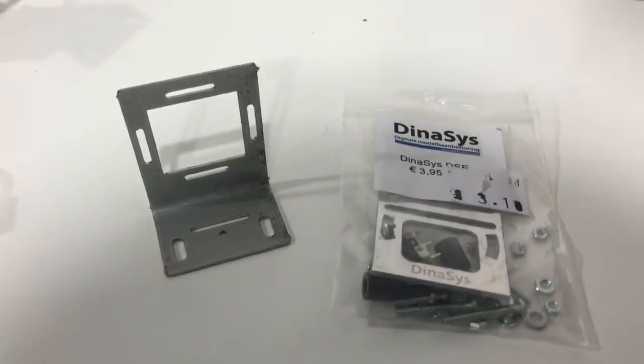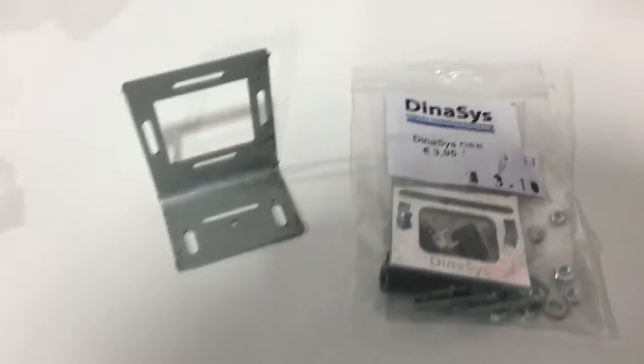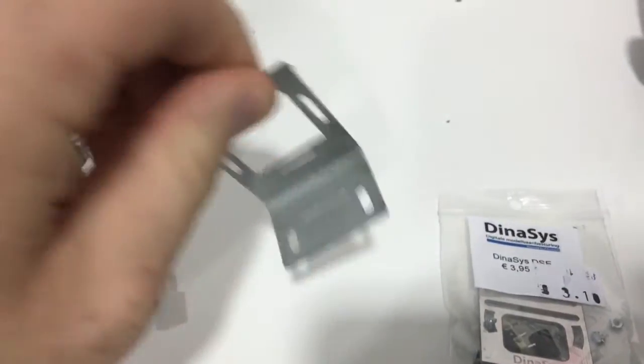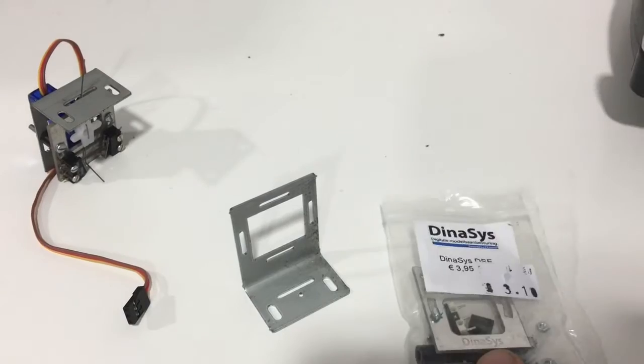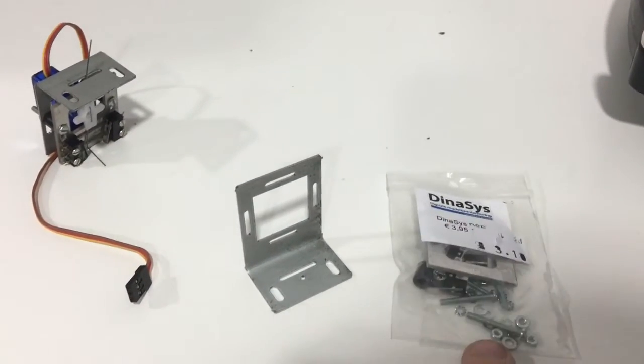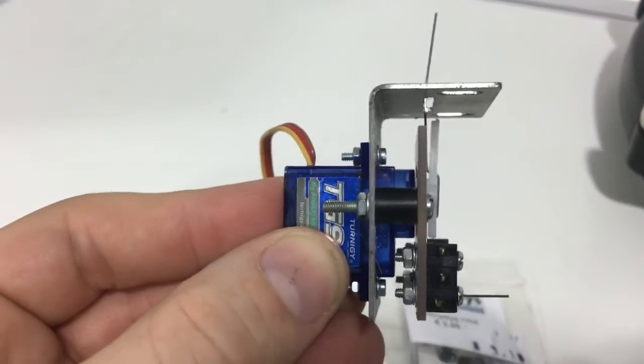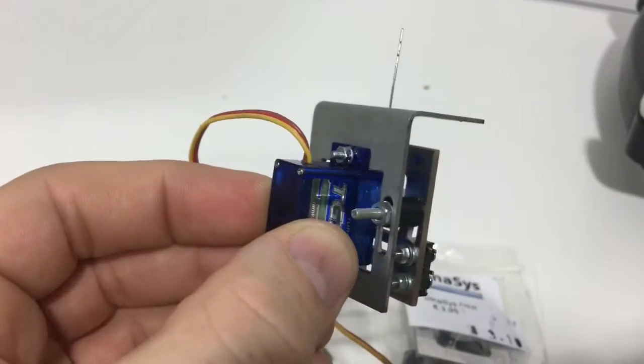Putting together my servo bracket for the point motor. These are the brackets, this is micro switches, and there's loads of screws and bits in there. This is what it looks like once done.